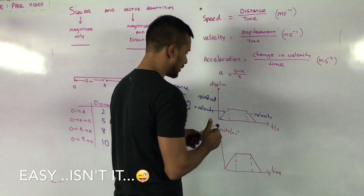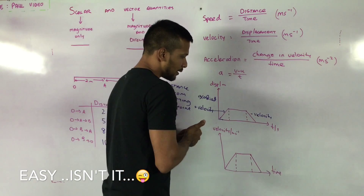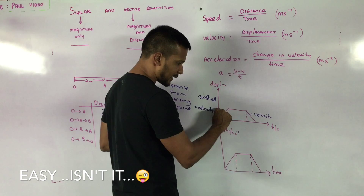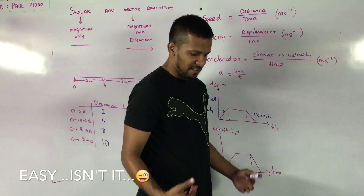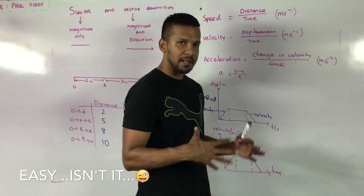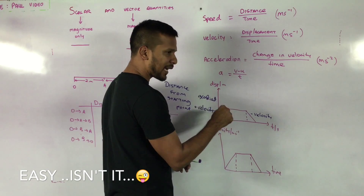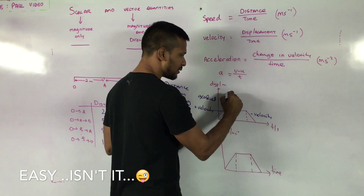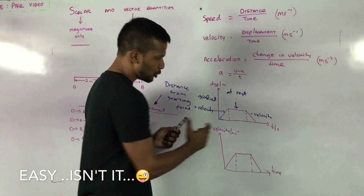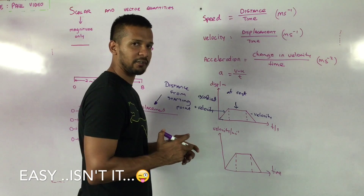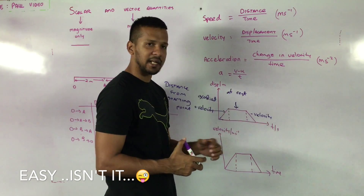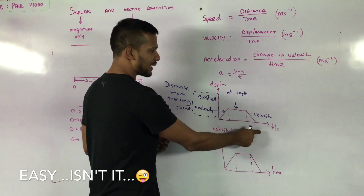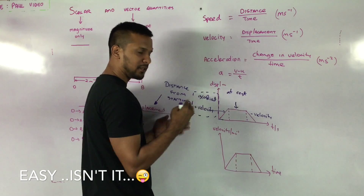A negative velocity here means it's slowing down — speeding up in the first section, slowing down in the second. A horizontal straight line means my displacement is remaining the same with time. If displacement isn't changing as time changes, it means the person is at rest or stationary during that period. So the key rules for a displacement-time graph: the gradient gives velocity, and a horizontal line means the person or particle is at rest.